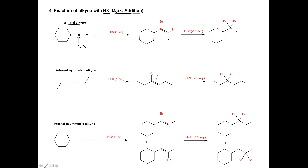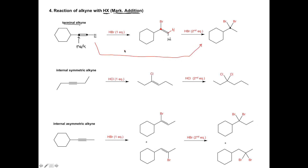Just as we saw with our previous example, this probably wouldn't be written showing one equivalent followed by a second. How this would be written is starting with your alkyne and writing HBr as two equivalents. We know that goes through the intermediate, but our final product is the fully halogenated product at the end.